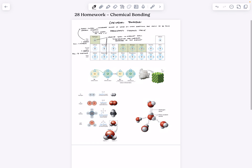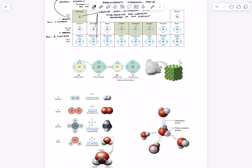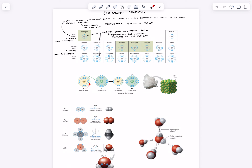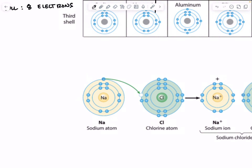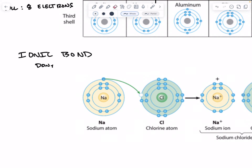There are three different types of chemical bonds that we're going to talk about today. The first type is called an ionic bond. This is a donate/receive electron type of bond.